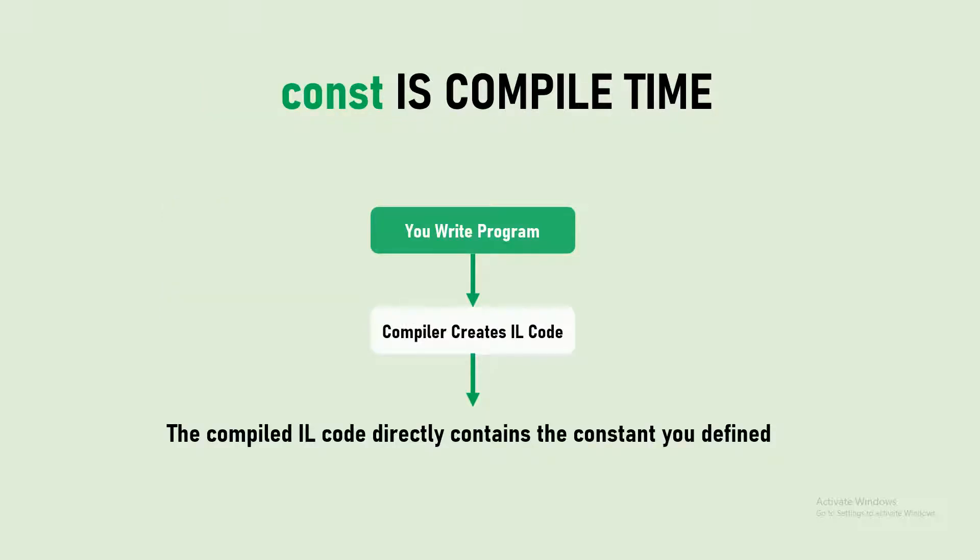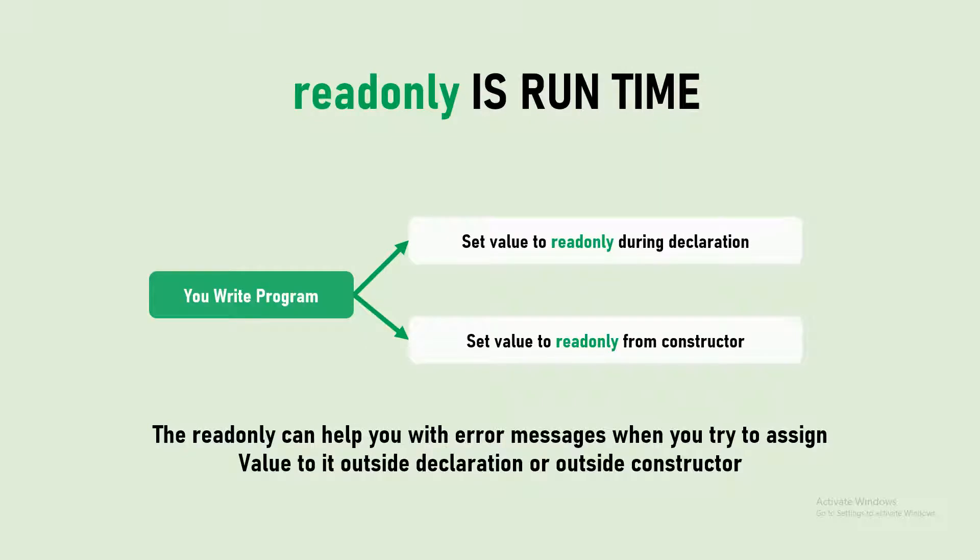Being a compile-time constant means you write the program and the compiler converts it into IL code — that is, the Intermediate Language code. When the compiler converts to IL code, it directly embeds the constant value you have defined, so that value will never ever change. This is what is called a compile-time constant.